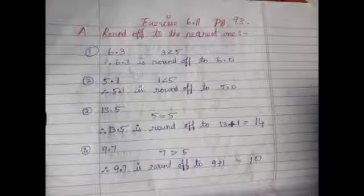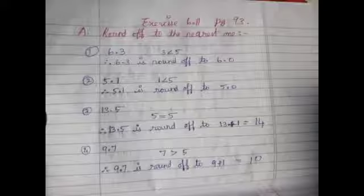Next exercise 6.11, page number 93. Round off to the nearest number. So already we know the round off numbers: tens, hundreds and thousands we read about in the first three lessons. And here we have using decimal points. 6.3, so round off nearest to ones place. See the tenth place decimal value. If it is less than 5 we have to write as it is. If more than 5 we need to add 1 with the ones place number. Here 6.3, 3 is less than 5, so round off nearest to 6.